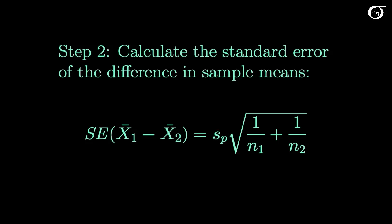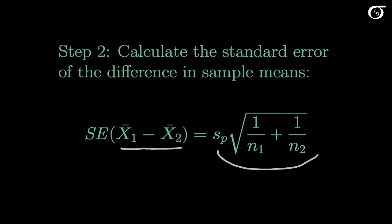Once we have that, we calculate the standard error of the difference in sample means. This is our estimator of the standard deviation of the sampling distribution of that difference. That standard error is going to come up in all of our statistical inference formulas.